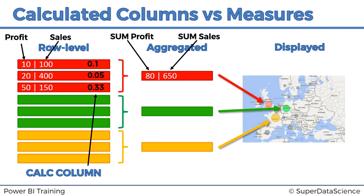But what will happen with this additional column when the data set is aggregated? We'd now have a new aggregation — the sum of the calculated column. But the thing with profit margin is that it doesn't make sense to add it up for each individual item. If you had more items, you could easily get a profit margin of over 100%, which makes no sense. Therefore, adding up the profit margin isn't going to be useful to us. So what is the profit margin for a whole region?